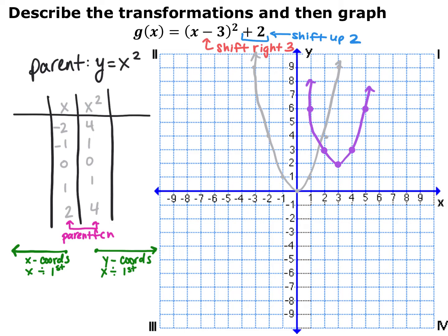Another option is to use a table to organize your transformations. I always start with my parent function in the middle — picking nice, easy parent points. For x I pick −2, −1, 0, 1, 2, and for x² my y-coordinates are 4, 1, 0, 1, 4. Anything moving to the right in the table affects my y-coordinates, and anything moving to the left affects my x-coordinates. In both cases, multiplication and division come first, then adding and subtracting.